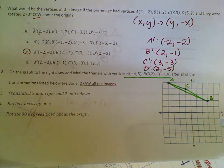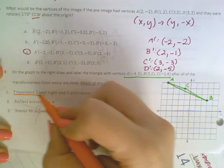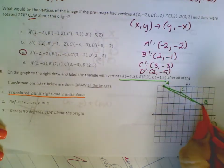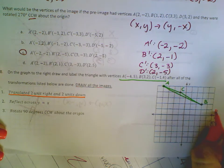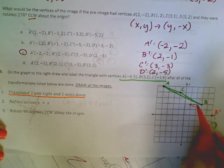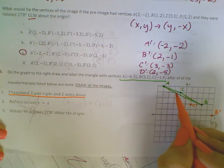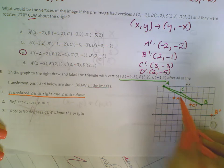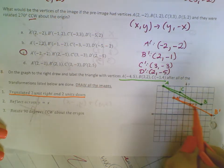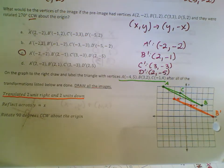So now it says that I need to translate two units right and two units down. That will be in orange. So I'll go right 2 and down 2. This will be B prime. Right 2, down 2, C prime. Right 2, down 2, A prime. Then when I connect everything, same triangle, same skinny little triangle.